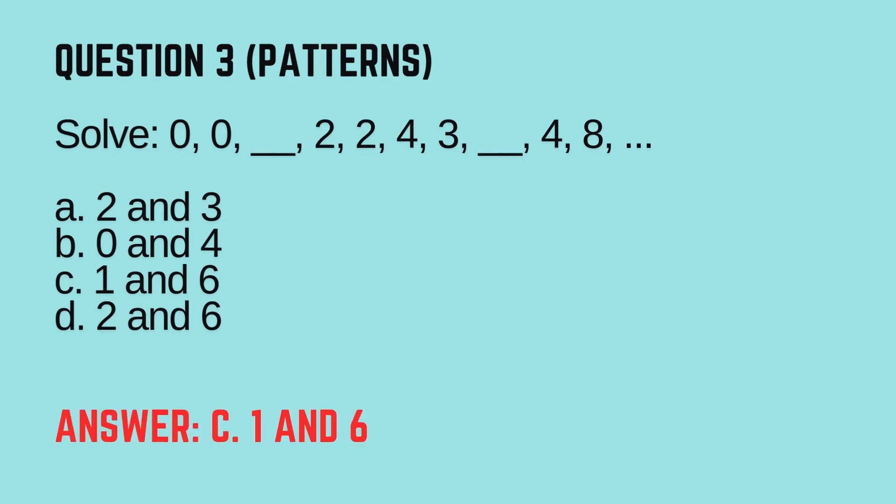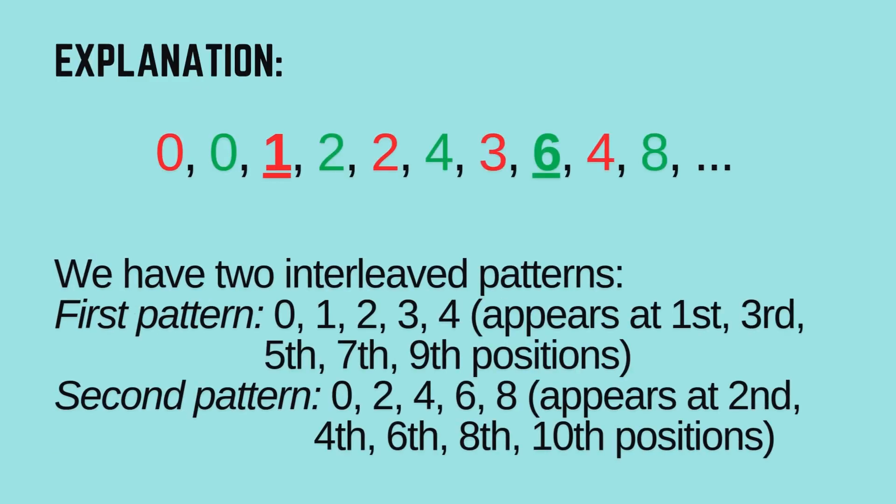The correct answer is C, 1 and 6. Let's learn how. For the given pattern 0, 0, 1, 2, 2, 4, 3, 6, 4, 8, we have two interleaved patterns. First pattern: 0, 1, 2, 3, 4 appears at 1st, 3rd, 5th, 7th, 9th positions. Second pattern: 0, 2, 4, 6, 8 appears at 2nd, 4th, 6th, 8th, 10th positions.